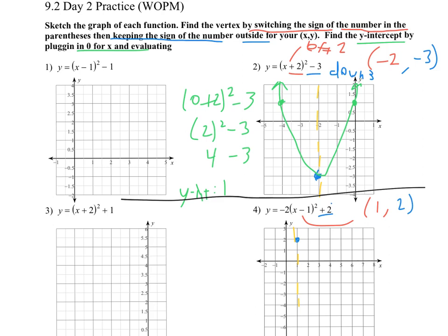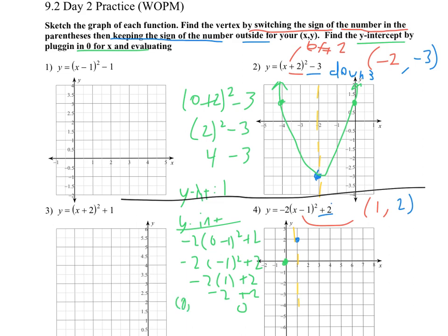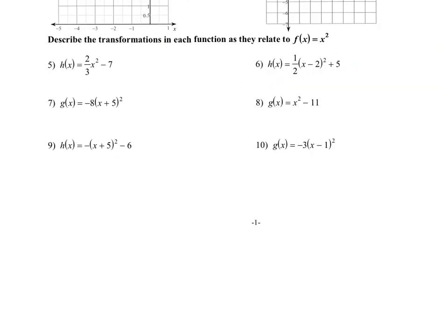Now I'll find the y-intercept. For this one it would be negative two times (0 minus 1) squared plus 2. Do the parentheses first, then the exponent, then the multiplication, then the addition. It adds up to 0, so I have a y-intercept at 0 — right there at the origin. I plugged in 0 for x and got 0 for y. I can draw the matching point on the other side of the axis of symmetry and draw our parabola going down.